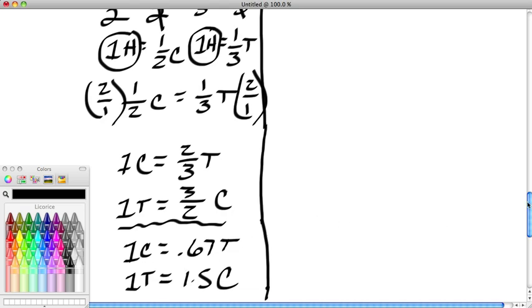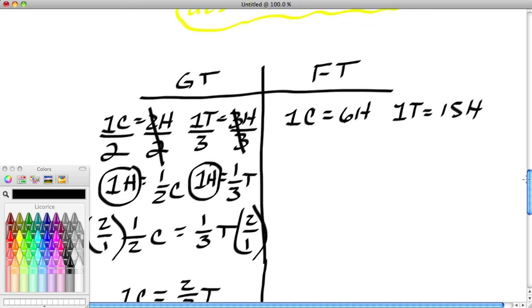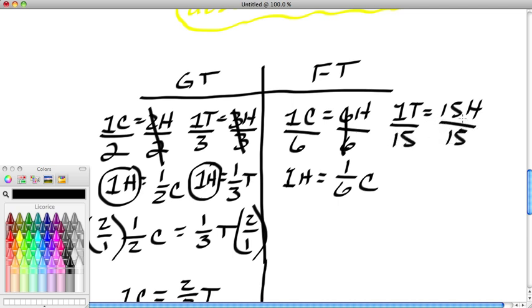We're going to do now the same thing for Five Thumbs. We're going to divide this side by six, divide this side by six. The sixes cancel here. One hour equals one-sixth corn for Five Thumbs. Divide this side by 15, divide this side by 15. Again, these cancel. One hour equals one-fifteenth tomato.